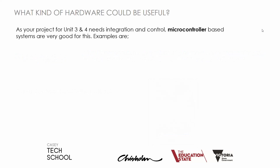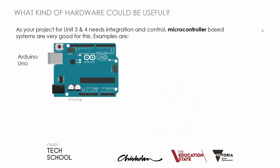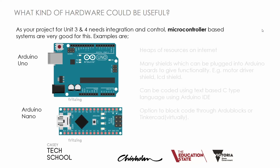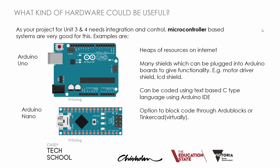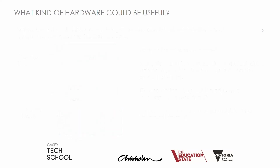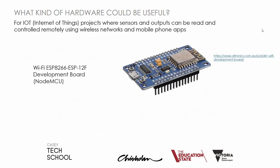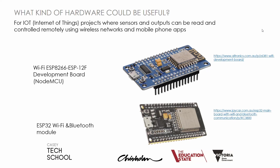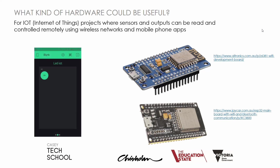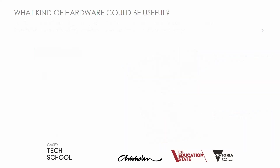For hardware, we need integration and controls — microcontrollers are great for this. Arduino Uno is good, and its smaller cousin, the Arduino Nano. There are heaps of resources on the internet. If you want an Internet of Things project using sensors and outputs remotely with wireless networks, the NodeMCU board and ESP32 board are boards to consider. They're available from local suppliers and can be used with apps you can build yourself to control components remotely.